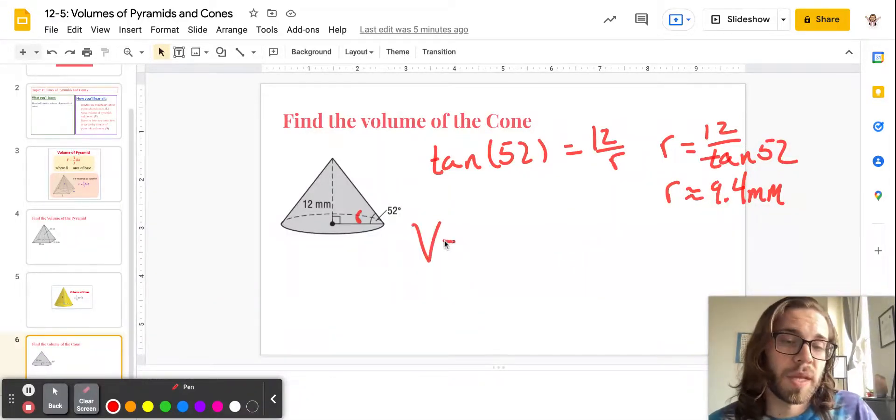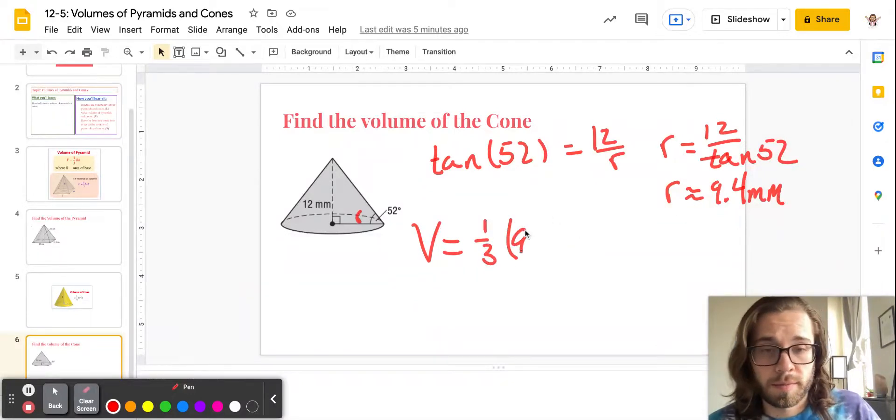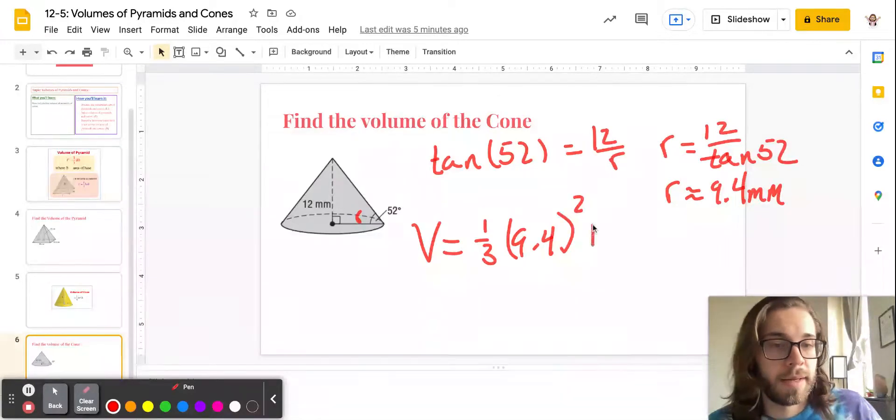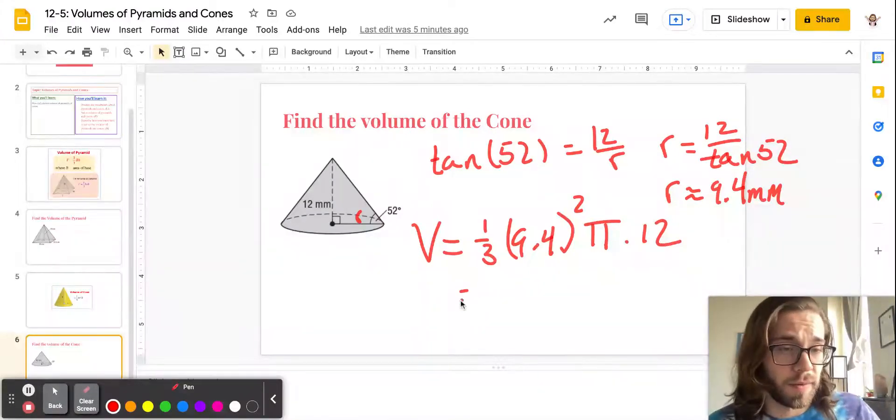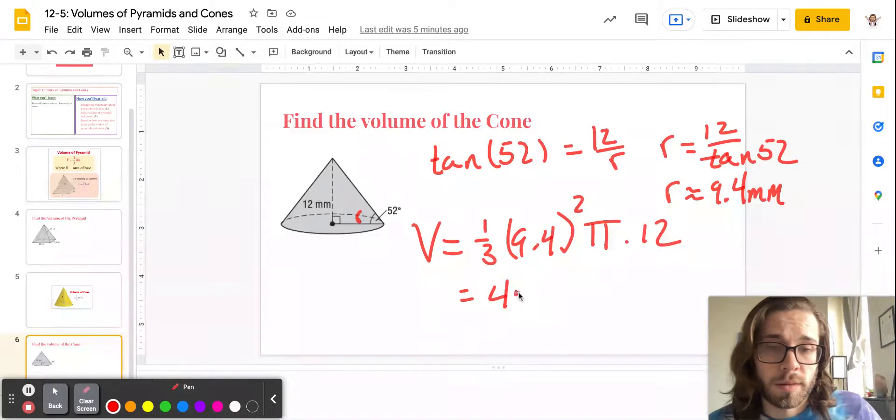But anyway, from here, what we will do is we'll plug this into the area. So, well, let's just find the volume right away. So we have 1/3, the radius squared, times pi, times 12. Okay. So first off, right off the bat, the 12 and the 3 cancel. That just leaves me with a 4. All right. 9.4.